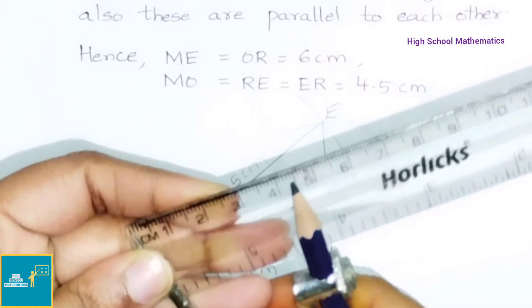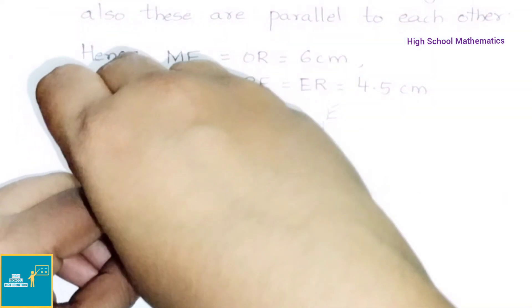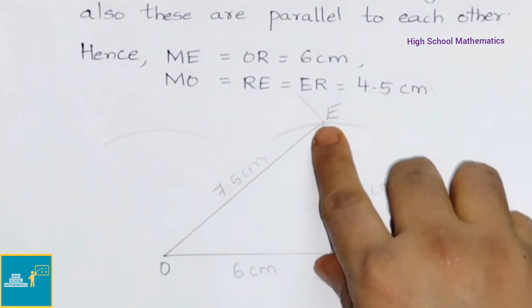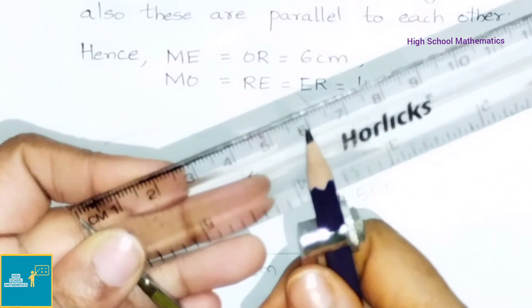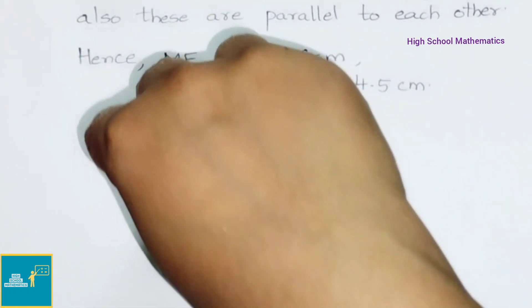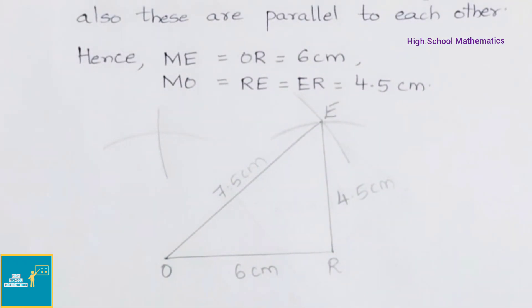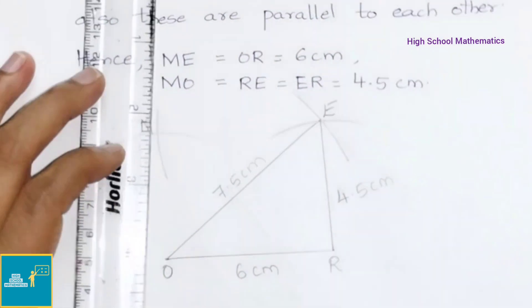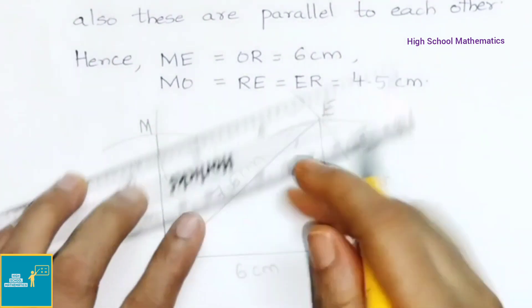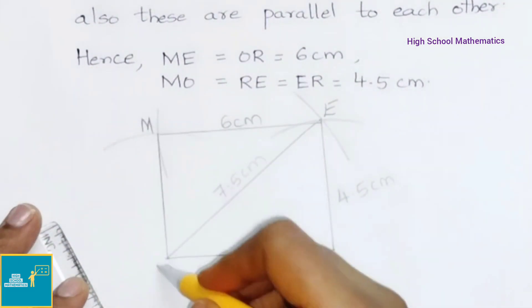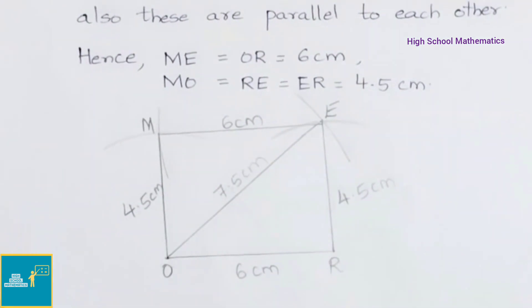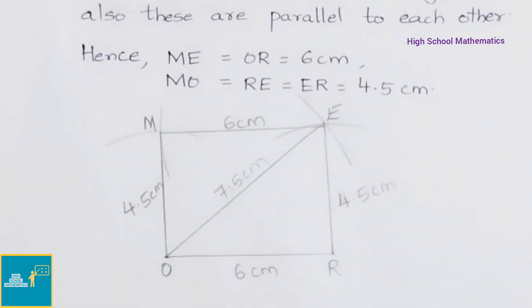Now with O as center take radius 4.5 cm and draw an arc. Next with E as center draw another arc of radius 6 cm. Draw with E as center an arc of radius 6 cm that intersects the previous arc at point M. Now join OM and EM. MO equals 4.5 cm. Therefore MORE is the required parallelogram.